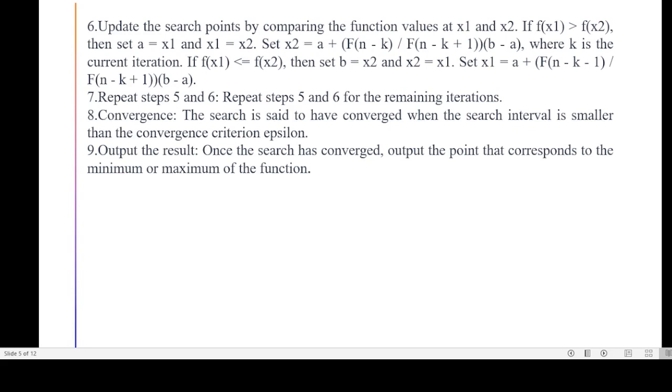There are also disadvantages in Fibonacci search method. The algorithm can only find the local minimum and cannot guarantee to find the global minimum. This method requires number of iterations to be predetermined which can be disadvantageous if the function is unknown. The method may converge slowly for certain functions which can result in large number of iterations and increasing computation length. The accuracy of method depends on choice of initial intervals and error tolerance which can be difficult to determine.